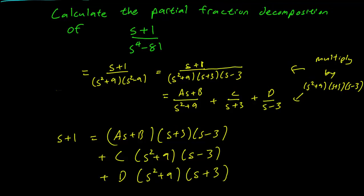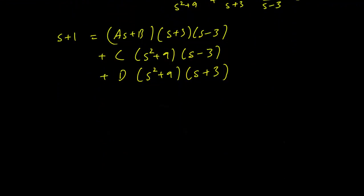And we divide into cases, as we always have. So case 1 is just s equals 3. And what happens here is that we have 4 equals, on the right-hand side, every term cancels except the D term. And we have D times 18 times 6. Solving for this, we get D equals 1 over 27.